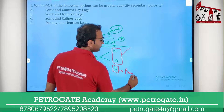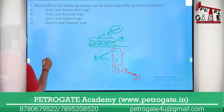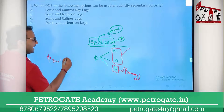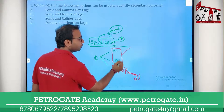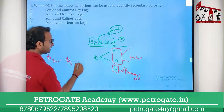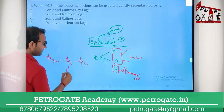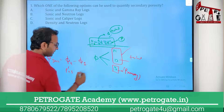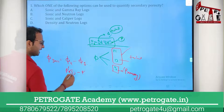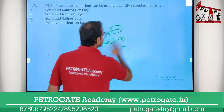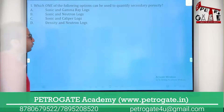If I want to calculate secondary porosity, I can do: total porosity (calculated by neutron or density) minus sonic log porosity. Total porosity equals primary plus secondary. If you subtract sonic porosity (which is primary), the primary cancels out and you get the secondary porosity.